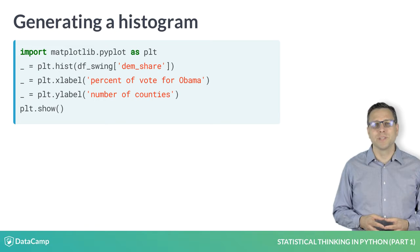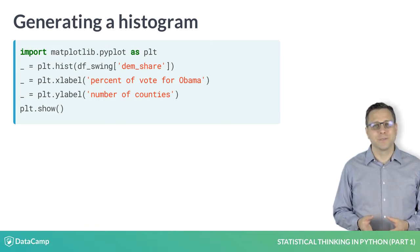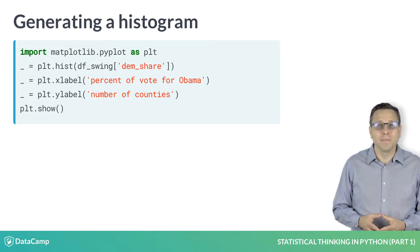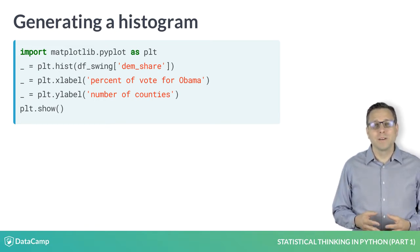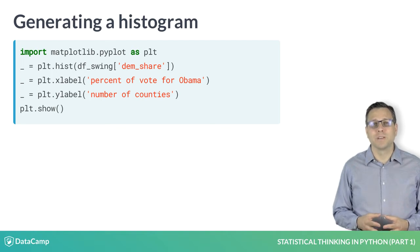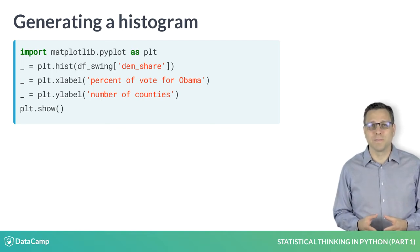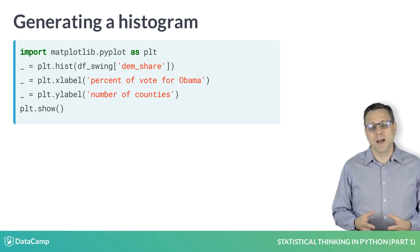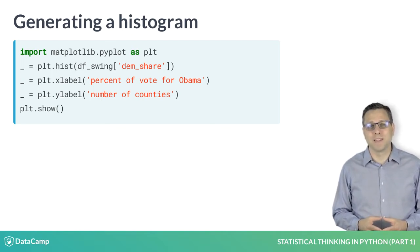Note that plt.hist returns three arrays that I am not interested in — I only want the plot. I therefore assign a dummy variable called underscore to them, which is common practice in Python.